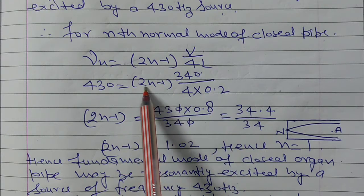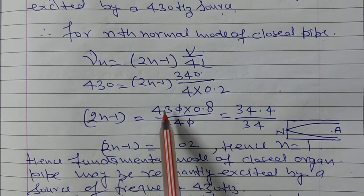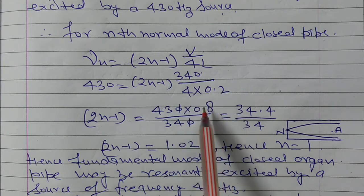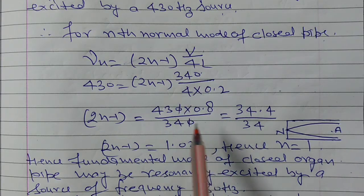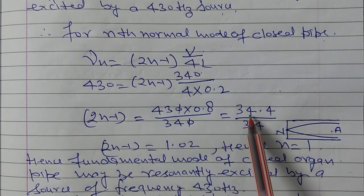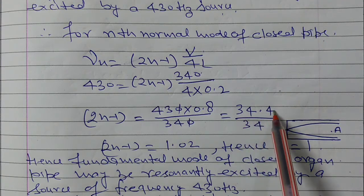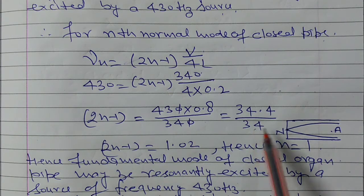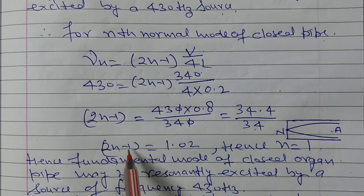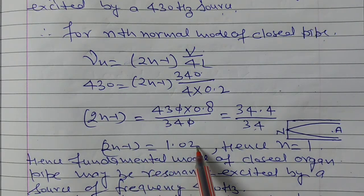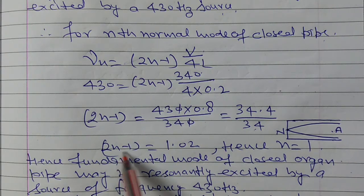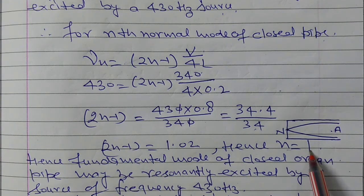Now this (2n-1) is equal to, cross multiply, this is 430 into 0.8 upon 340. Now this is 34.4 upon 34, and on dividing, (2n-1) is equal to 1.02, and hence on solving, n=1.